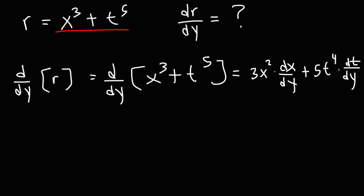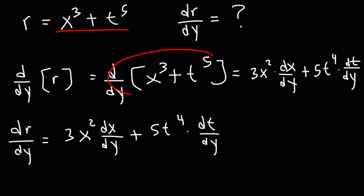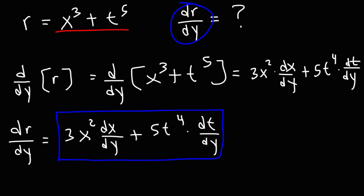So that's our answer. dr/dy is equal to 3x squared times dx/dy, plus 5t to the fourth times dt/dy. So this tells us what to do, and this tells us what the answer is. Hopefully you can see the difference between these two expressions.